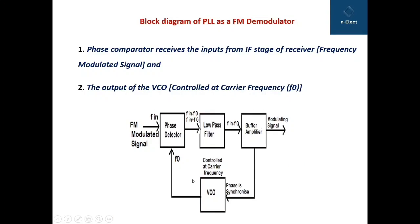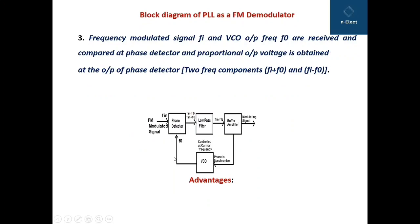The output of VCO — that is, the voltage controlled oscillator — is controlled at the carrier frequency. Whatever output frequency you are getting here is equal to the carrier frequency of the modulated signal. A modulated signal is a combination of carrier signal and modulating signal, and this VCO output is maintained at the carrier frequency. The frequency modulated signal F-in and VCO output frequency F0 are received and compared at the phase detector, and a proportional output voltage is obtained.